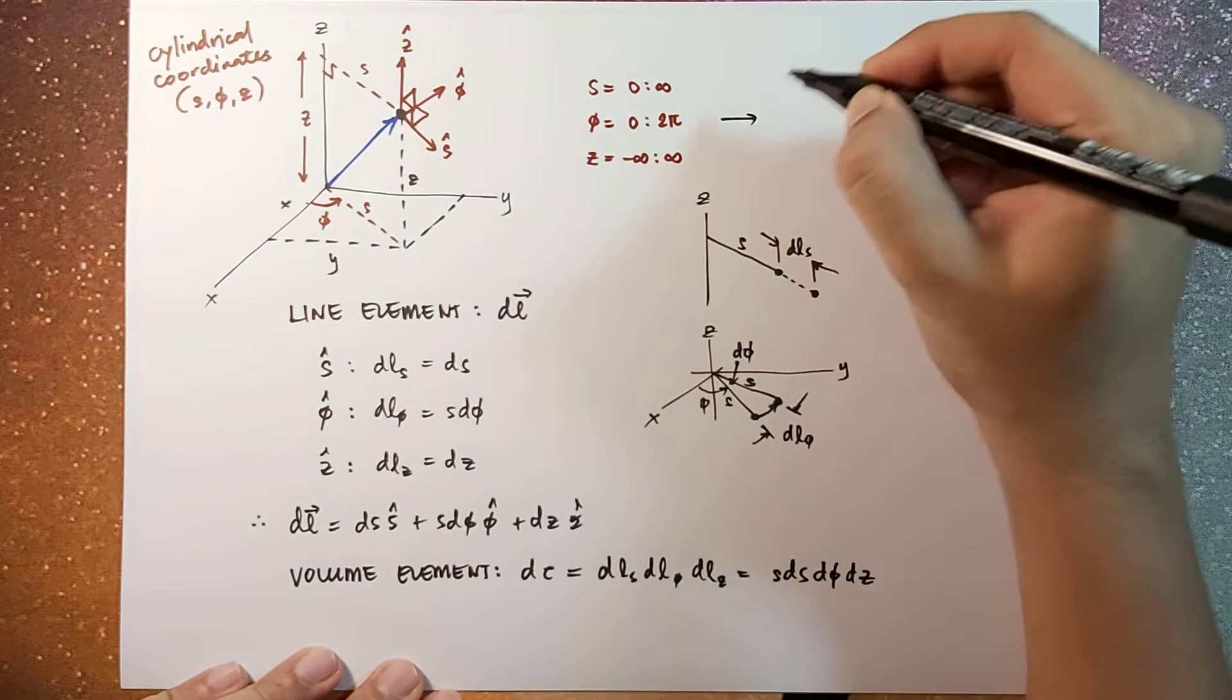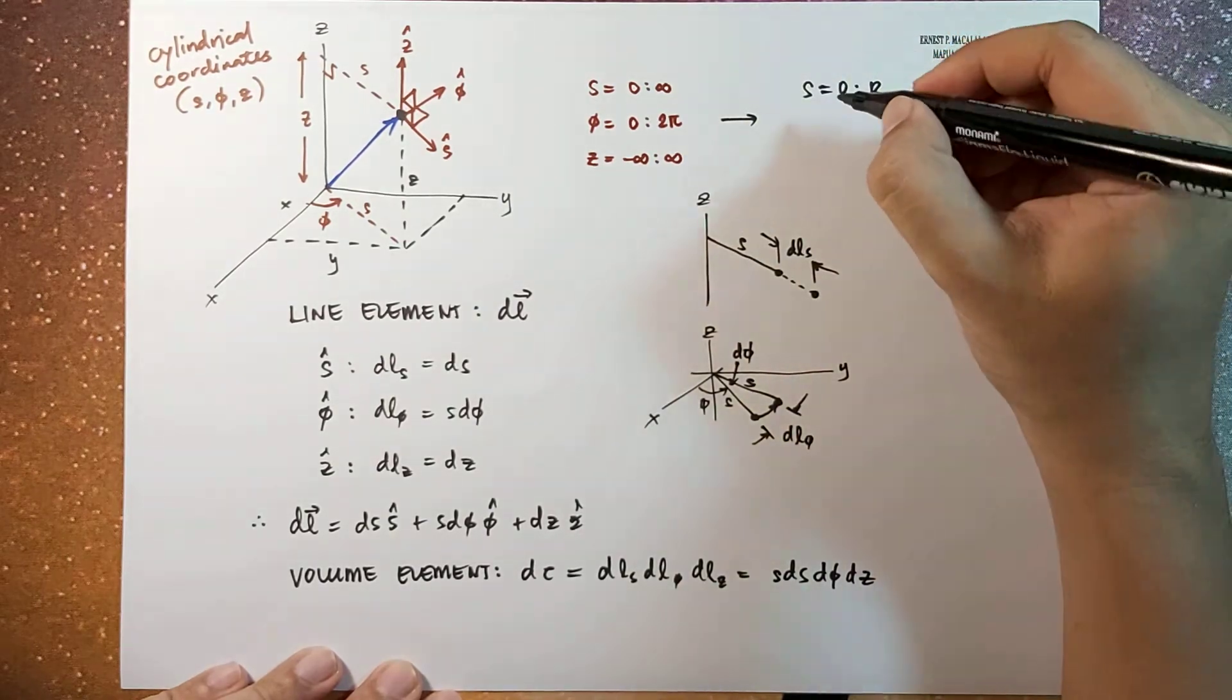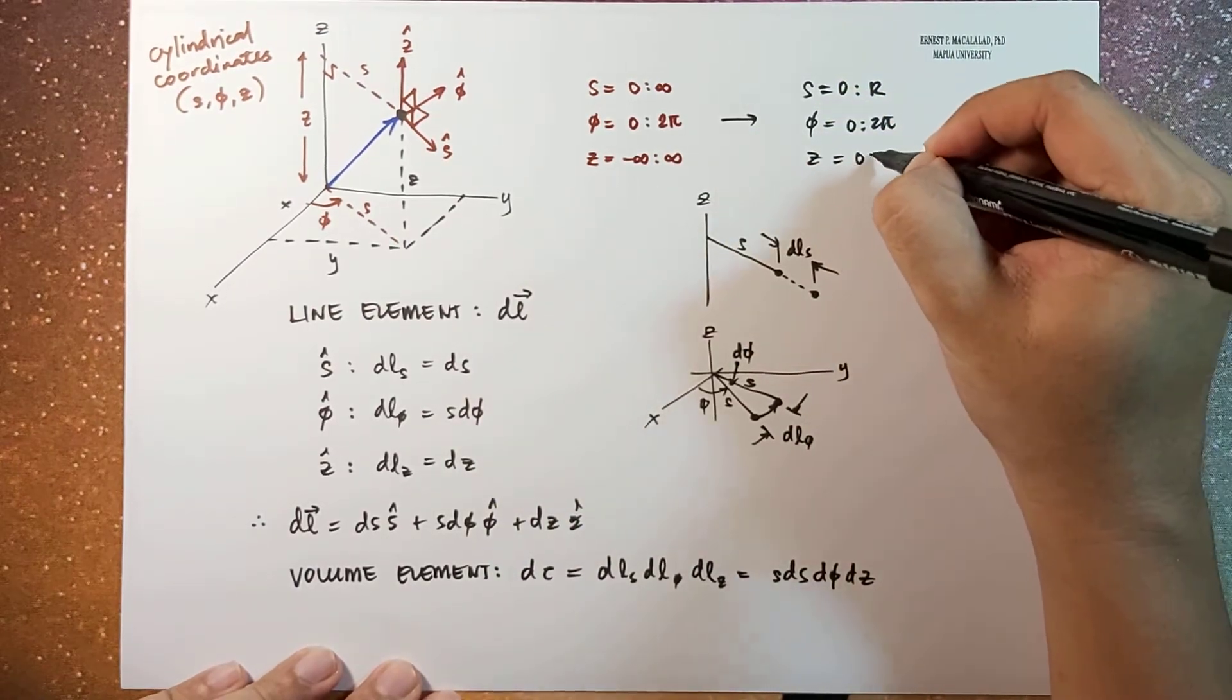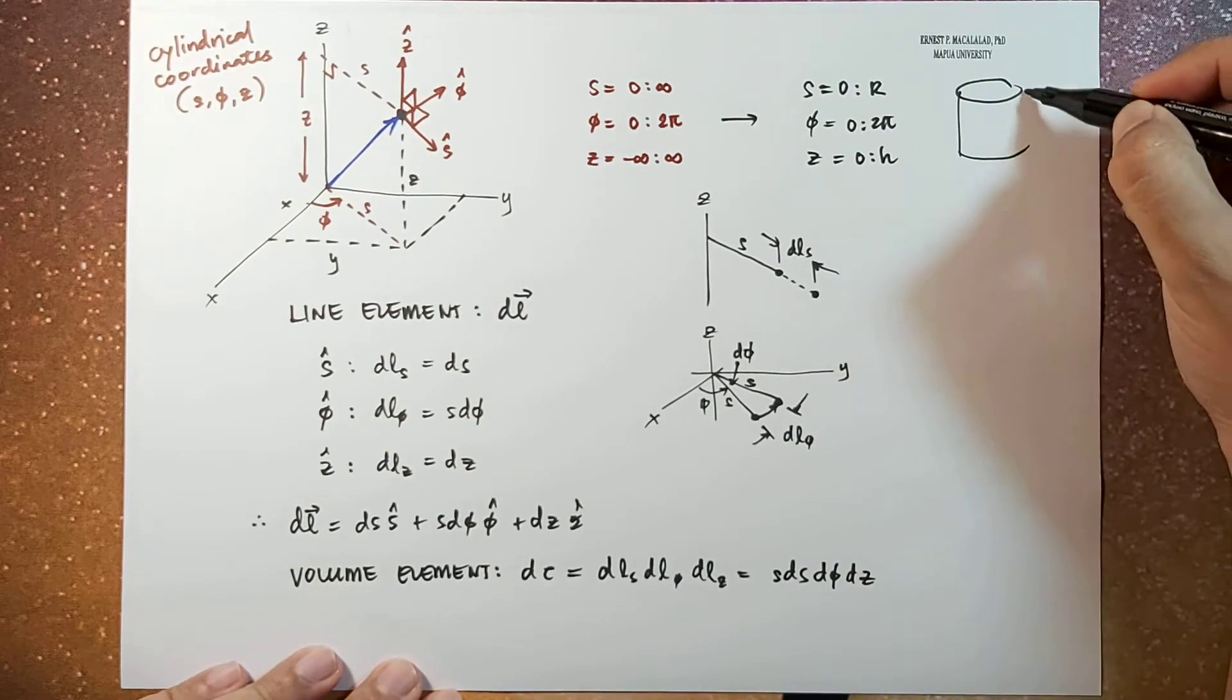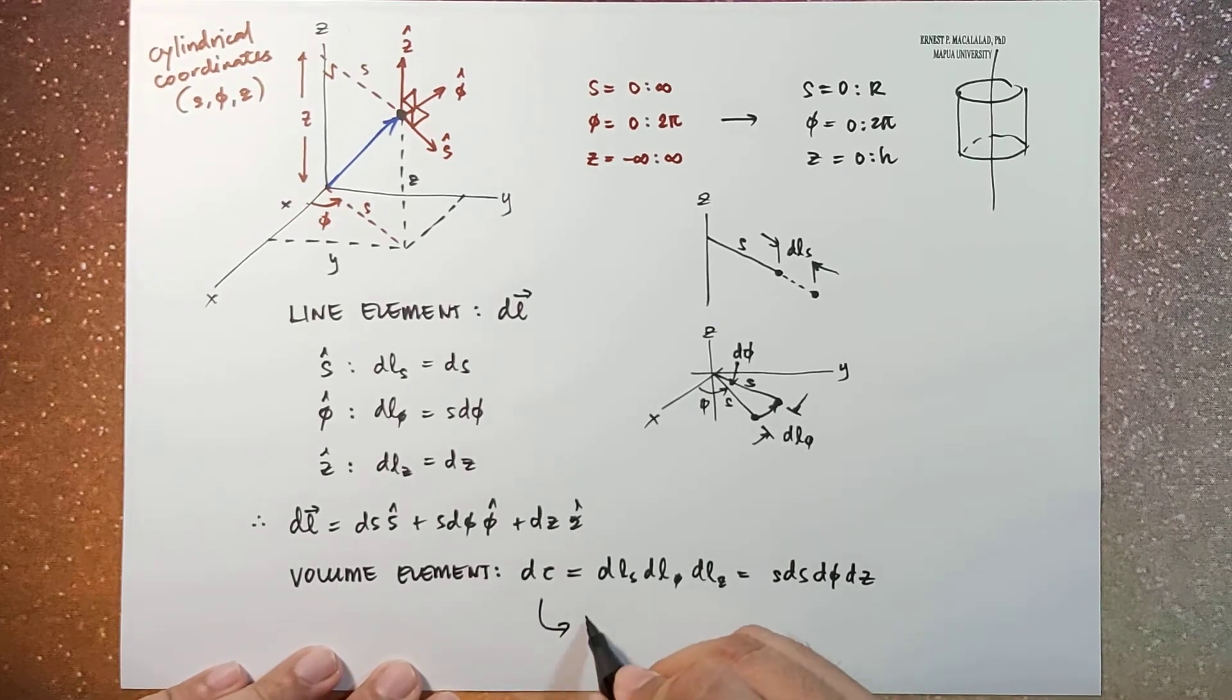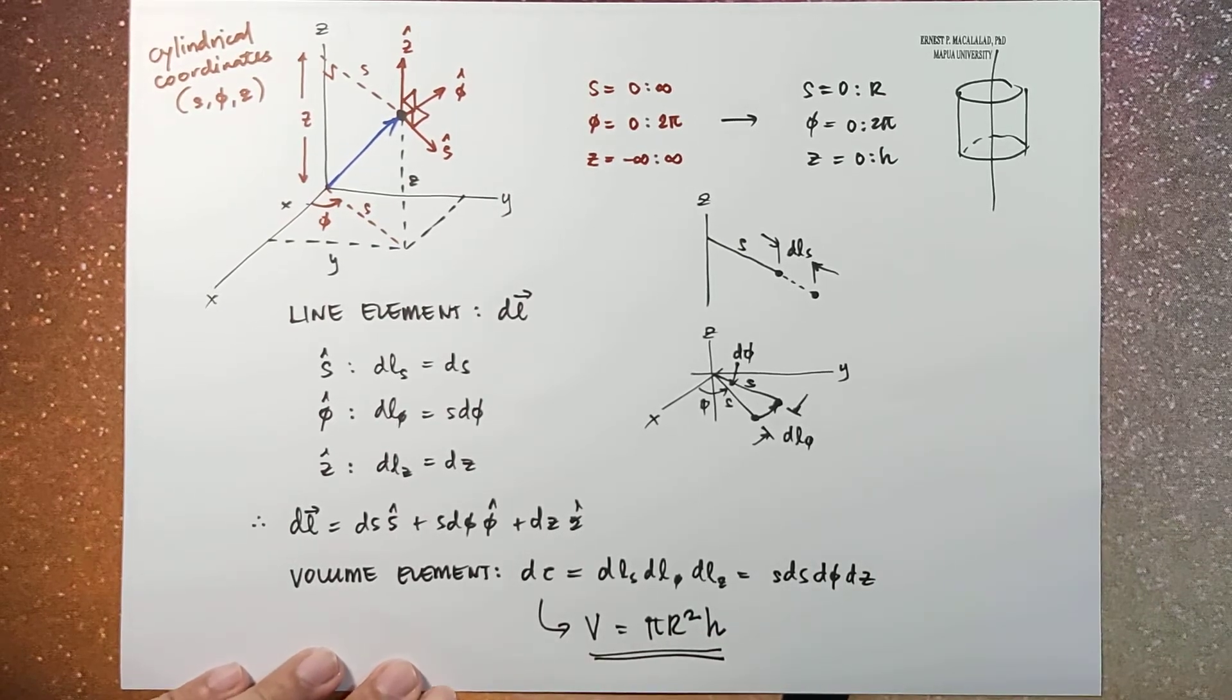And if we're going to use the following range of values for s, say from zero to r, and then phi is from zero to 2π, and then z is from zero to h, so we're getting the volume of a circular cylinder. This will yield the total volume of π r² times h, which is what we expect and what we've learned in your geometry classes.